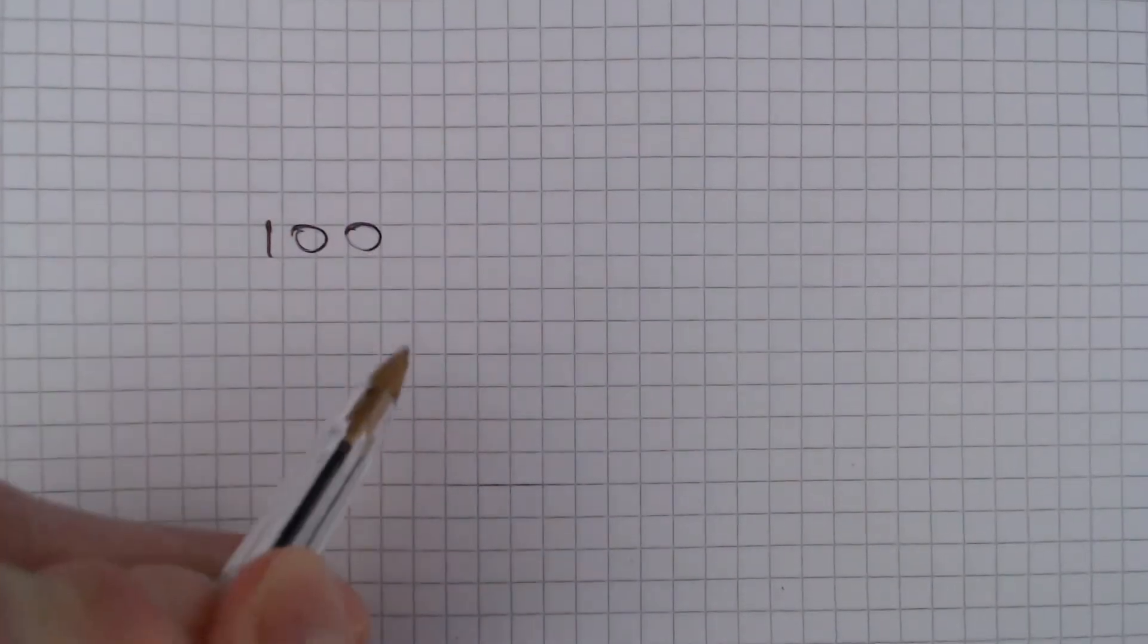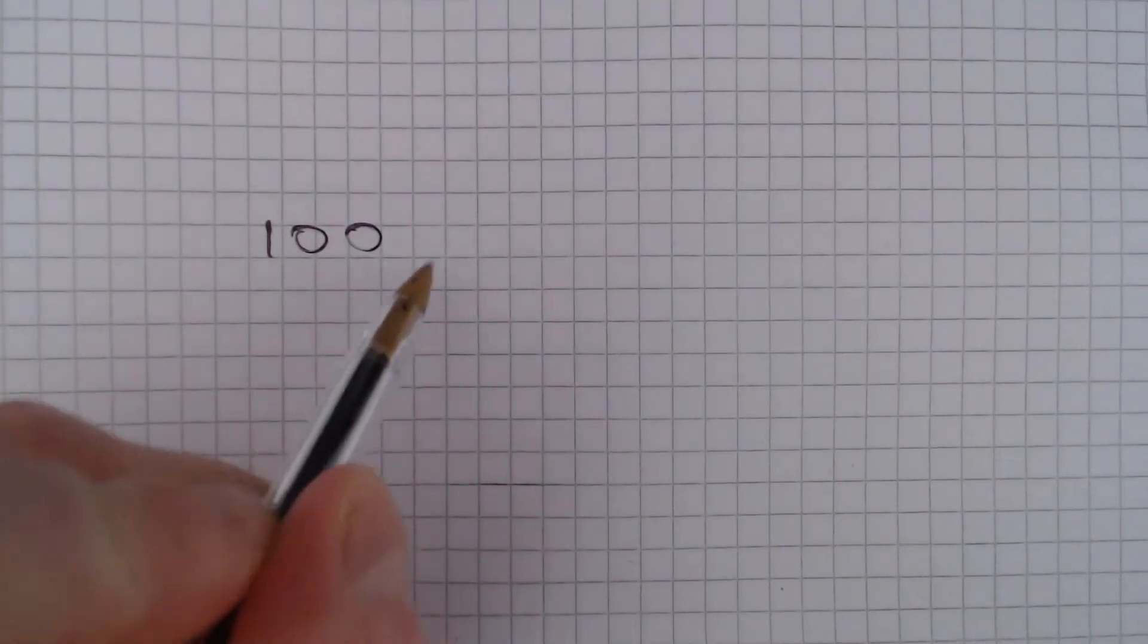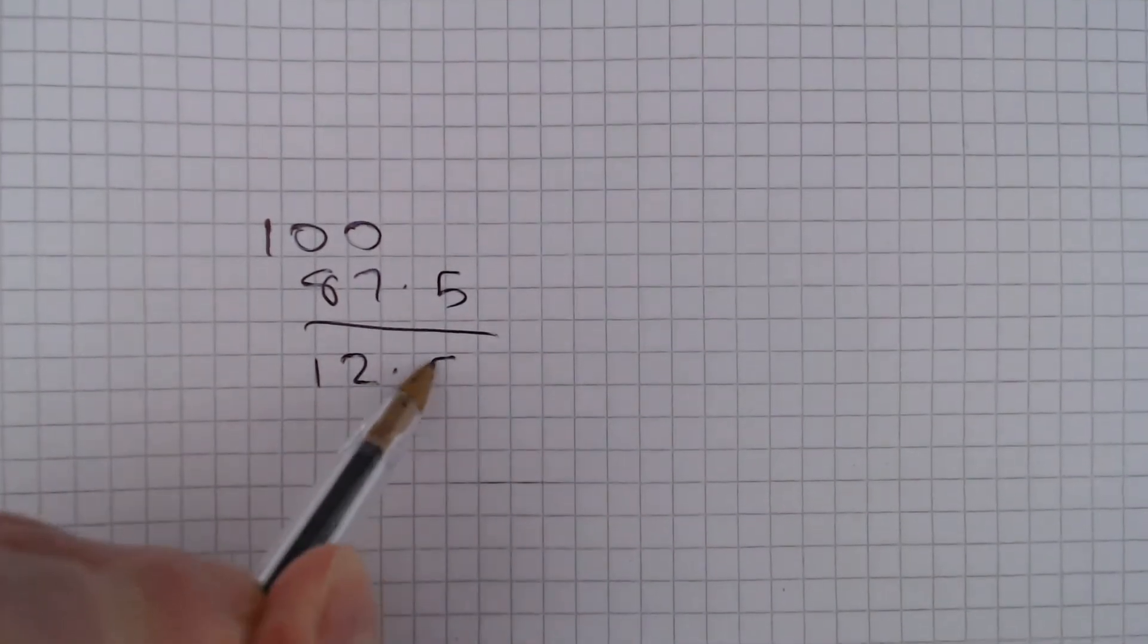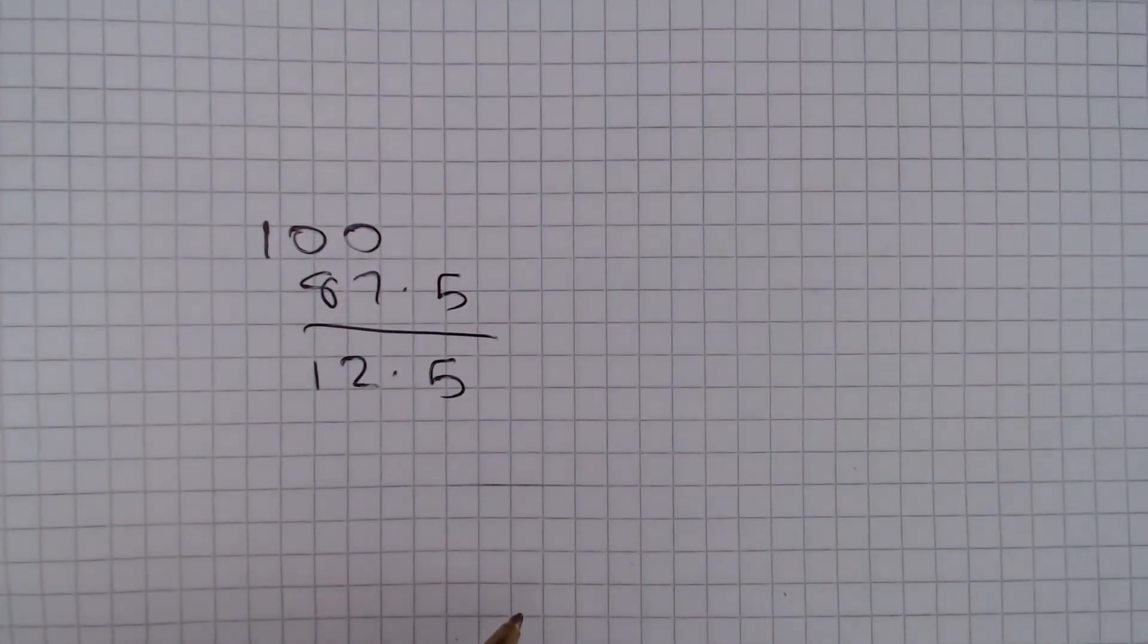In this question we are told that 87.5% of the pupils passed a GCSE examination and the question asks us to find the fraction of the pupils that did not pass the exam and give our answer in its lowest terms. Remember that percentages are always out of 100. So if 87.5% passed the test, then 100 minus 87.5, which will give us 12.5, did not pass the test.